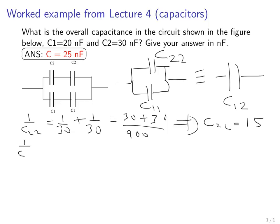And similarly for 1 over C1, C1. So C1 is 20. This is the rule for combining capacitors in series. You add up the inverses of the capacitance. And that equals 20 plus 20 divided by 20 times 20. And that implies C1, C1 equals 10.